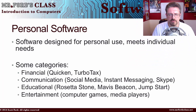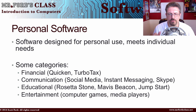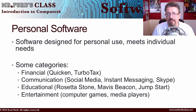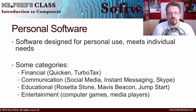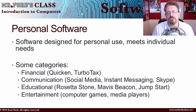Personal software is the stuff you use for personal use — it meets your individual needs. Categories include financial software, for example Quicken, a good home budget program, or TurboTax for filing taxes by April 15th. Communications covers social media — Facebook, Twitter, Instagram, Pinterest — as well as social media communication programs.